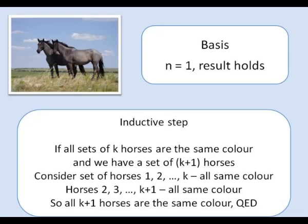suppose we have a set or suppose the result is true for sets containing k horses. If we're given a set of k+1 horses, we can take the subset containing horses 1 up to k, that's a set of k horses so by the inductive hypothesis these horses are all the same colour. If we then take the set of horses 2 and 3 up to k+1, that's another set of k horses which are all the same colour by the inductive hypothesis.